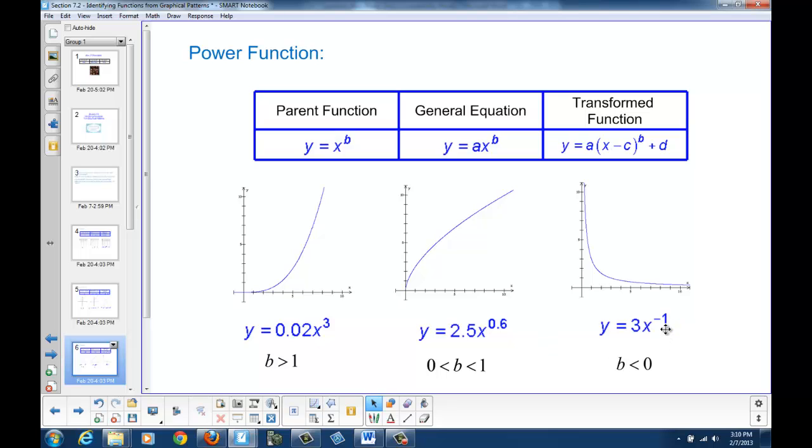If our b value or our power is less than 0, we have a negative power, then we can see that the graph does not go through the origin. In fact, we have an asymptote at x equals 0 along the y-axis. And the graph also has a horizontal asymptote along the x-axis. So the graph doesn't go through the origin. It decreases and is concave up throughout its entire domain in the first quadrant.